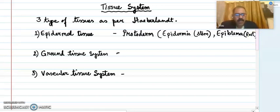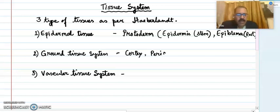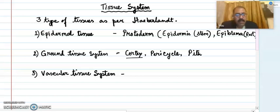Now coming to the ground tissue system. Generally the ground tissue system is divided into three subsystems: cortex, pericycle, and pith. These three make up the ground tissue system.